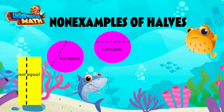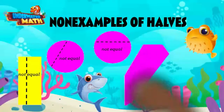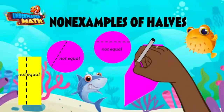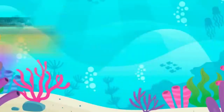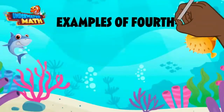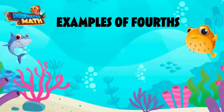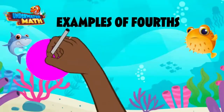This would also not be equally split into halves. What about this shape, Sir Puffington — is it broken into equal halves? No, the halves aren't equally sized. Okay, what if we wanted to break something into fourths?